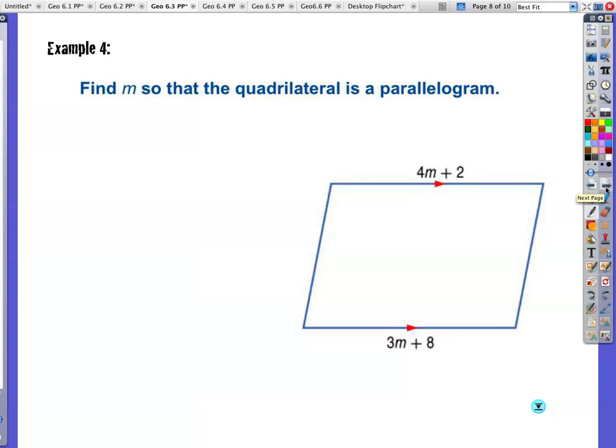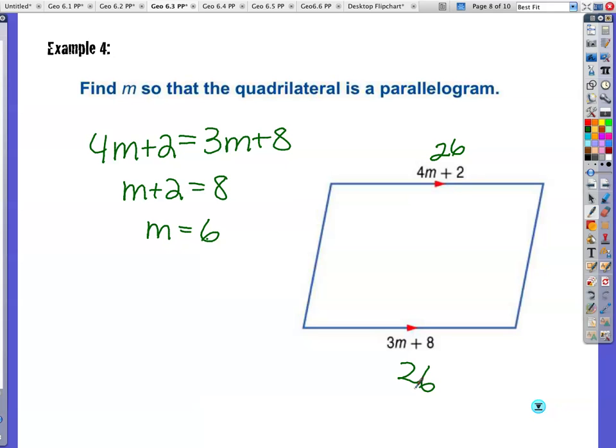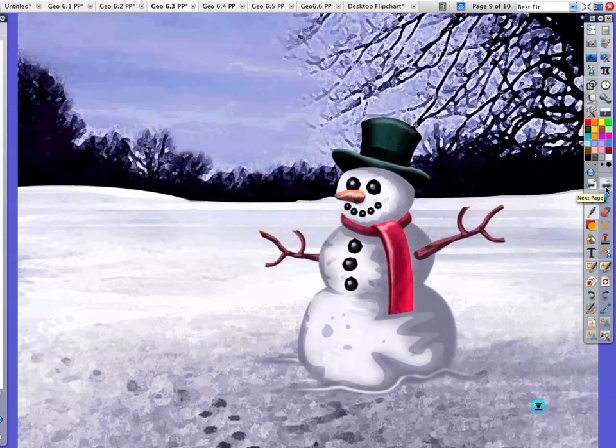Example four. Find m so that the quadrilateral is a parallelogram. Once again, opposite sides, one pair at least is parallel. In order to prove that it's actually going to be a parallelogram, then those opposite sides need to be congruent. Okay, so we're going to set them equal to each other. Subtract 3m from both sides. Now I'm going to subtract 2 from both sides. I get m is equal to 6. Double check. 6 times 4 is 24, 24 plus 2 is 26. Put 6 in here, 18 plus 8 is 26. Boom, boom. It is a parallelogram. And now you get to have a happy winter.